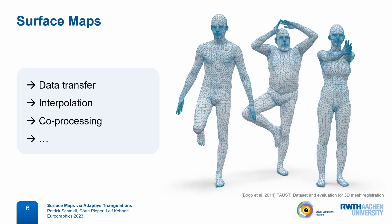And more generally, whenever we want to process multiple surfaces in correspondence, we usually need to construct some form of common base domain between them, such as this compatible triangulation here. But again, that requires computing an underlying surface map.